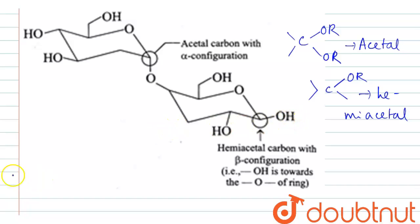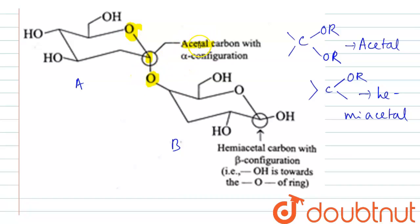Now, let us see. This is ring A and this is ring B. In ring A, this carbon is attached to two alkoxide groups — here and here — so it is an acetal carbon. Where ring B is attached, this carbon is attached to only one alkoxide group, therefore it is a hemiacetal carbon. So, ring A has an acetal carbon and ring B has a hemiacetal carbon.